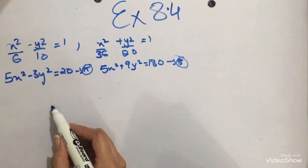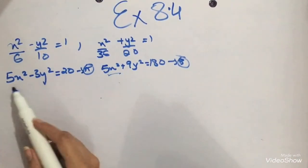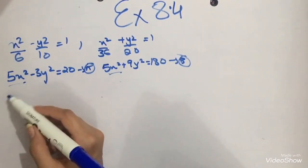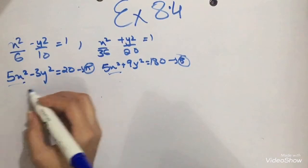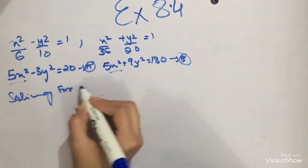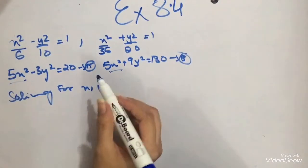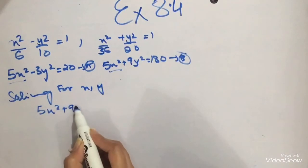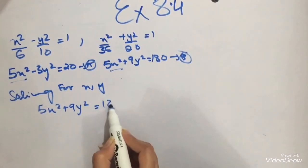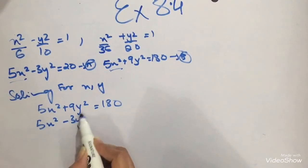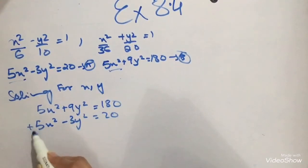Now I notice both equations have a 5x squared term. If I subtract one from the other, the x terms will cancel out and I can solve for y. I have: 5x squared plus 9y squared equals 180, and 5x squared minus 3y squared equals 20. I will subtract them.